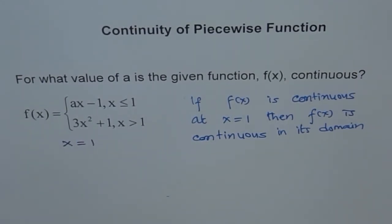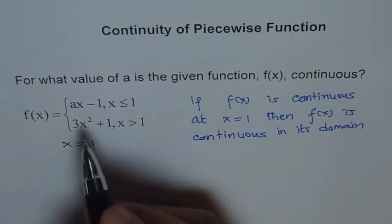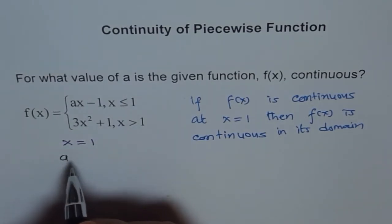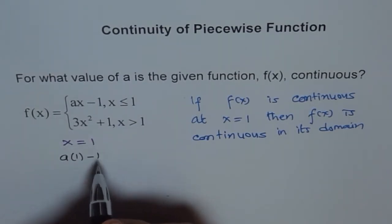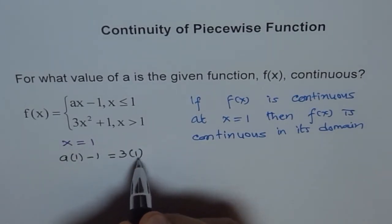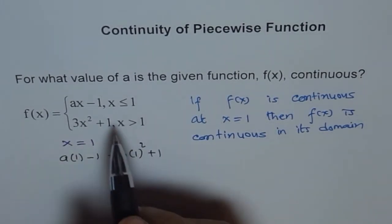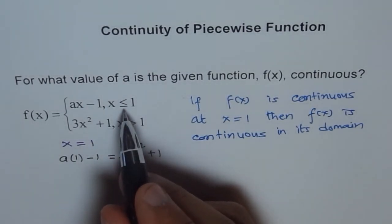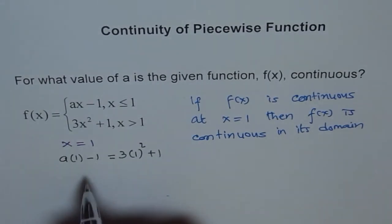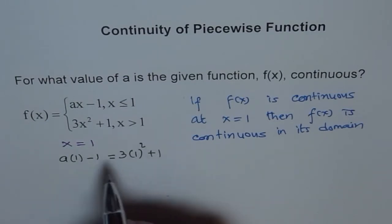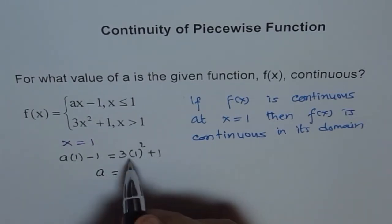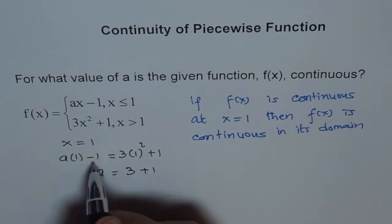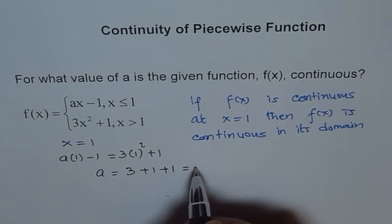At x equals one we need both to be same. At x equals one we have a times one minus one should equal three times one squared plus one. Both should be equal - this may be a hole and this is going to fill that hole. From here we get a minus one, so we get a equals three times one which is three plus one, and we get a equals five.